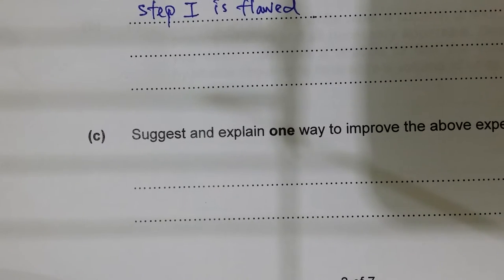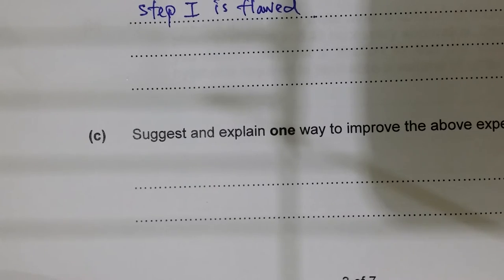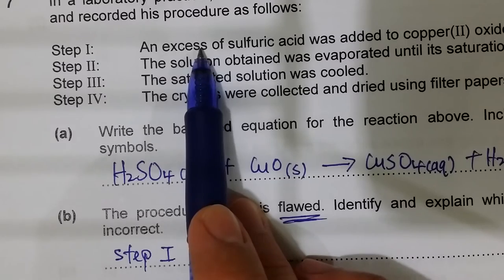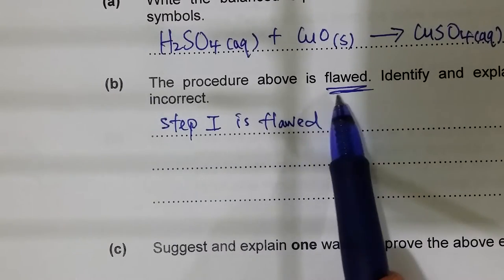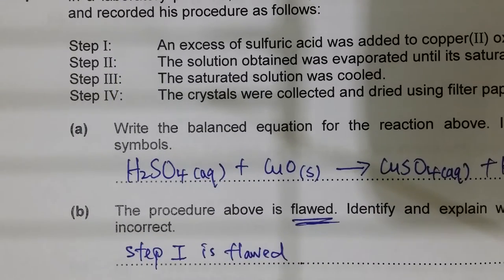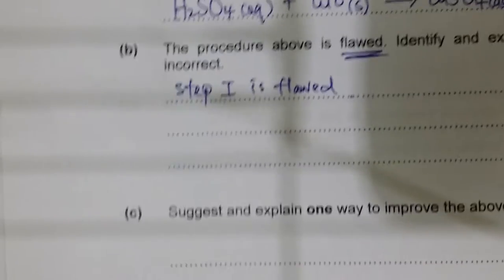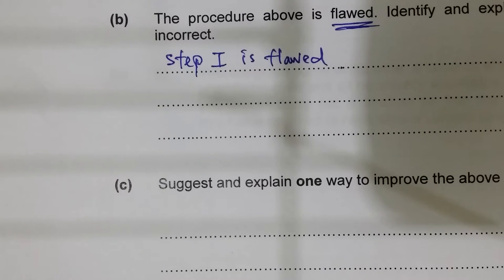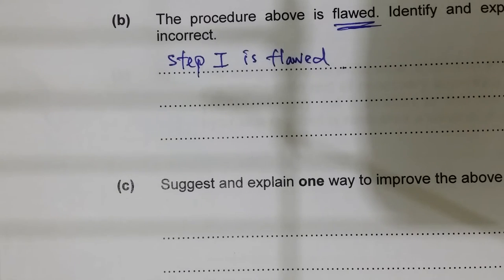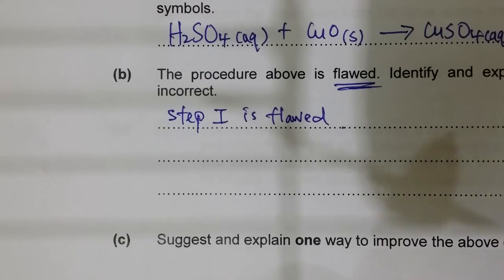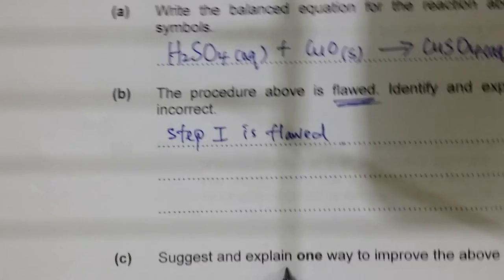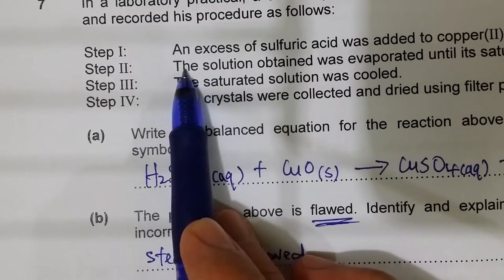To improve the experiment, correct step one: add copper(II) oxide in excess to the sulfuric acid instead. Then filter the mixture to remove the unreacted copper(II) oxide. This ensures no excess acid remains in solution, and step two of the original procedure can then follow directly.